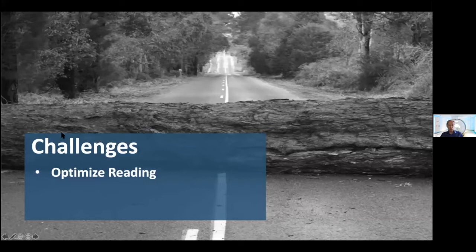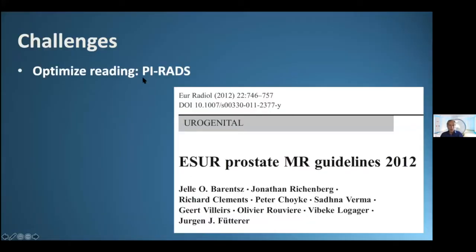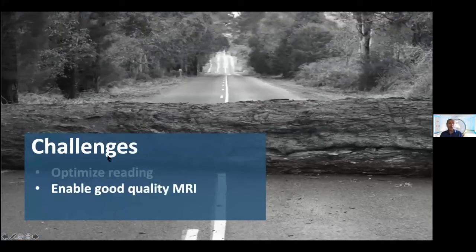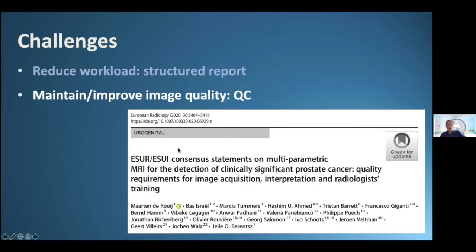The challenge is to conquer this tsunami. We can do this by optimizing reading, which was done by creating PI-RADS in 2012 with updates in 2016. The other challenge is to enable good quality MRI — unfortunately, not all MRIs are of adequate quality. Therefore, the ESUR and the EAU European Society of Urological Imaging published a consensus statement on mpMRI for the detection of clinically significant cancer, describing quality requirements for acquisition, interpretation, and radiologist training.